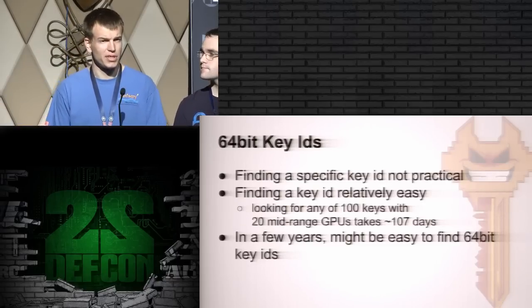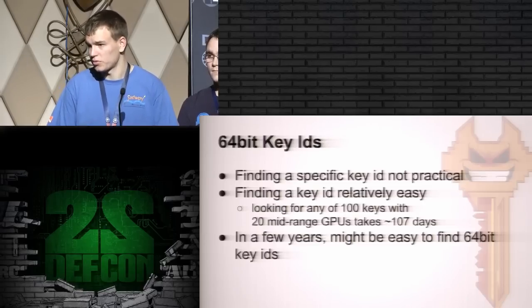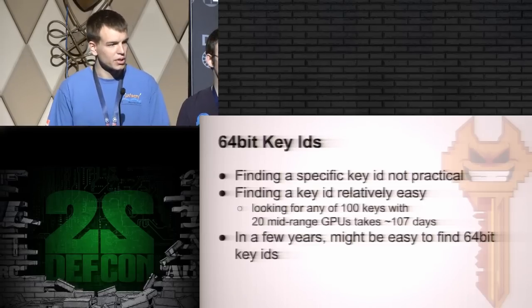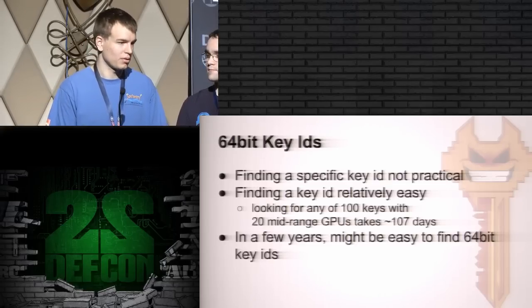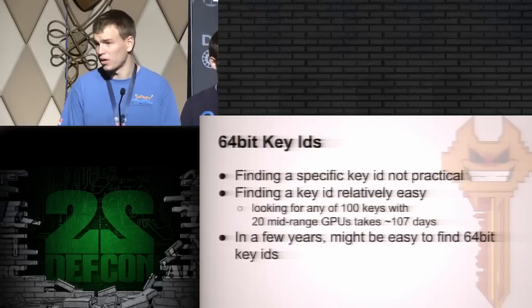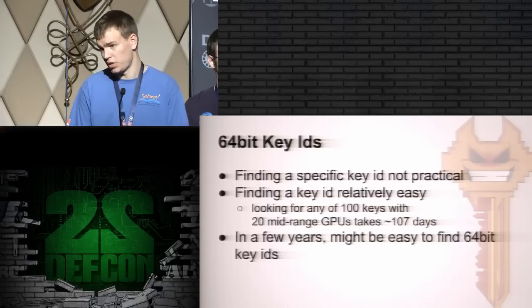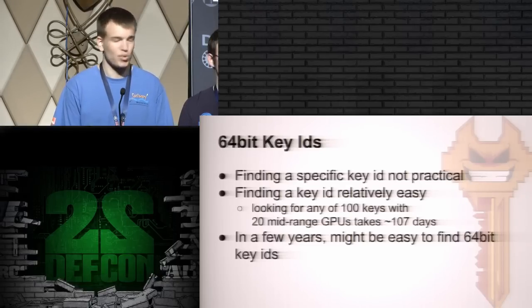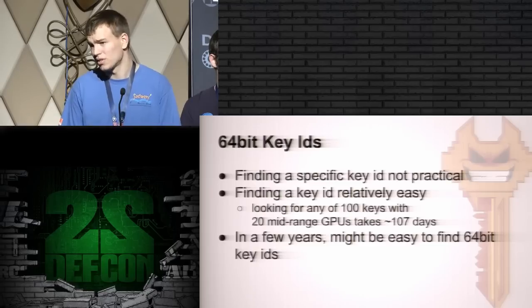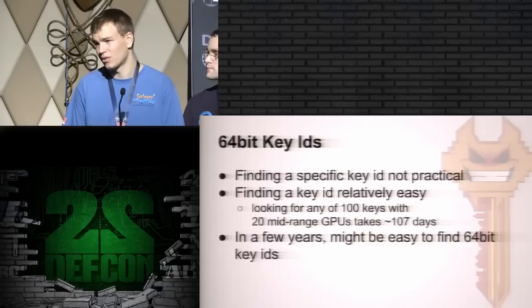Another way to specify how to receive a key from GPG's key servers is the 64-bit key ID — the obvious path forward to make this more secure. At the moment, finding a specific key with a 64-bit key ID is not very practical. However, if we wanted to find one of 100 keys — say a list of 100 different software packages — given 20 GPUs looking for 100 keys, it would take approximately 107 days. So this is fairly strong at the moment, not practically broken, but in the long run this isn't going to hold up.